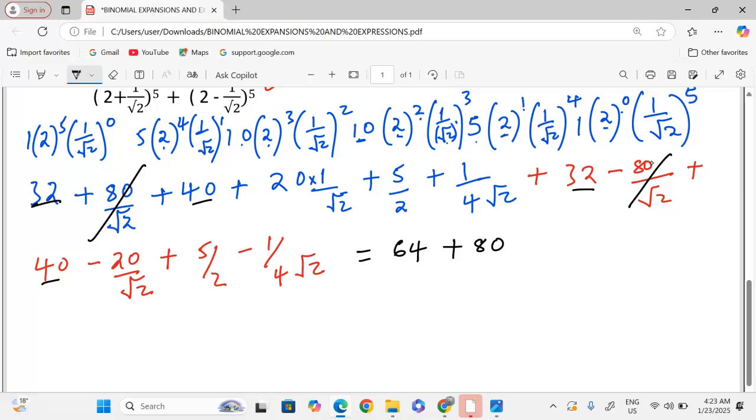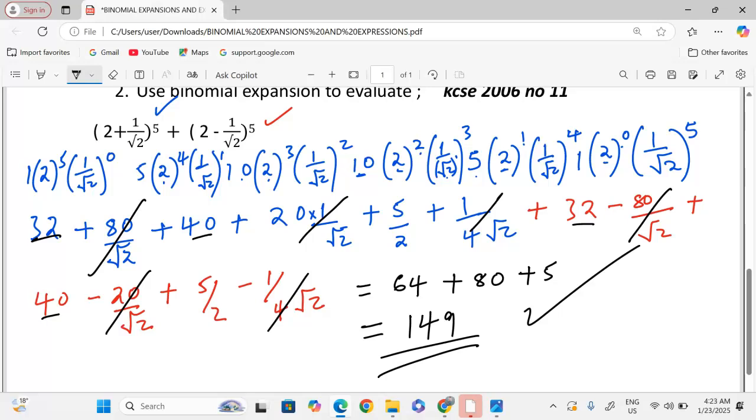We are done with 40 and 40. This one and this one will cancel. 5 over 2 and 5 over 2 will give us 5. Then, this one and this one will cancel. That way, we will be talking of a final answer of 64 plus 80 plus 5, giving us 149.